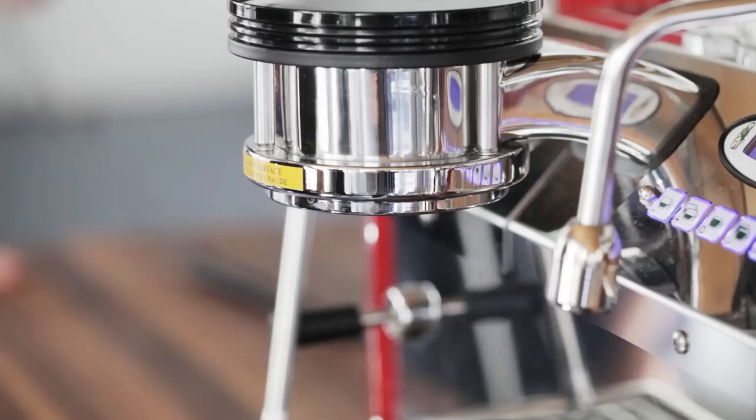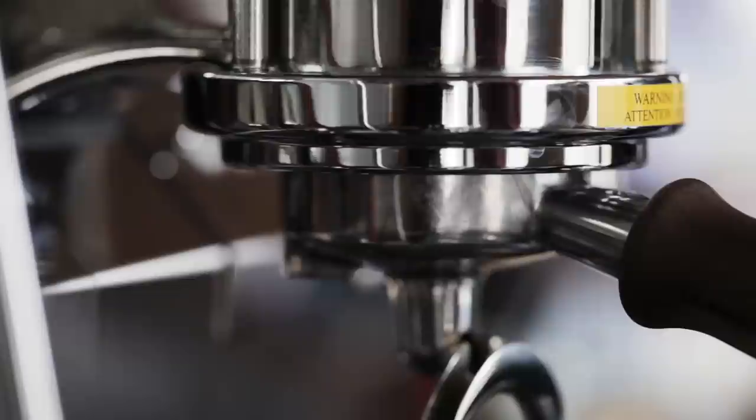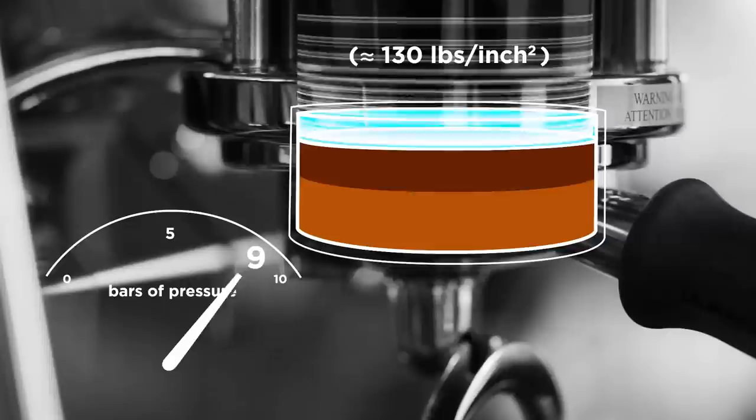the espresso machine delivers water at a stabilized temperature near 200 degrees Fahrenheit. As the space above the puck fills with water, the machine applies 9 bars of pressure, about 130 pounds per square inch, with a mechanical pump to enable percolation of the compact, finely ground coffee cake.